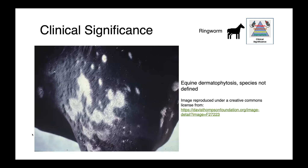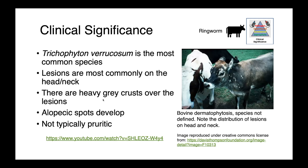In this image you can see some alopecic regions on a horse associated with equine dermatophytosis. The species was not actually defined, but it is probably Trichophyton equinum.